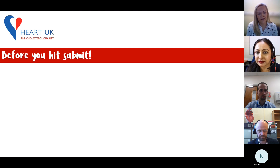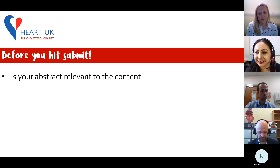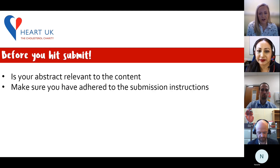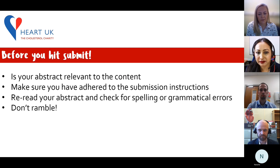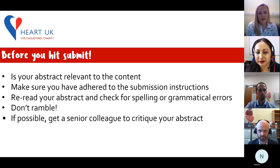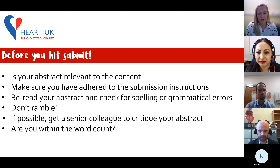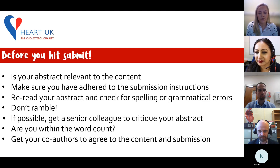Before you hit submit, check that your abstract is relevant to the content of your work and that you've adhered to the submission instructions. Take time to re-read your abstract and check for spelling or grammatical errors. Don't ramble and, if possible, get one of your senior colleagues to critique your abstract. Make sure you are within the word count and get your co-authors to agree to the content and submission.